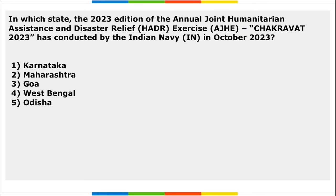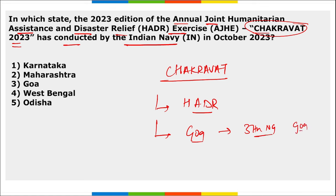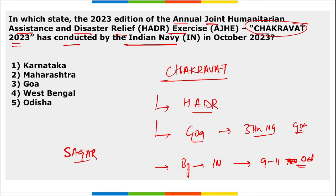Next: in which state was the 2023 edition of the annual joint humanitarian assistance and disaster relief exercise Chakravat 2023 conducted by Indian Navy? Chakravat is a HADR — Joint Humanitarian Assistance and Disaster Relief — exercise. It was conducted by Goa. Note that the 37th National Games were also held in Goa. It was conducted by Indian Navy from 9th to 11th of October. It was held under the SAGAR initiative, which stands for Security and Growth for All in the Region.